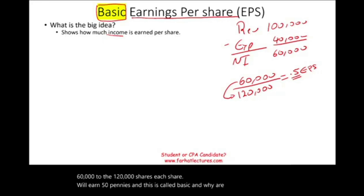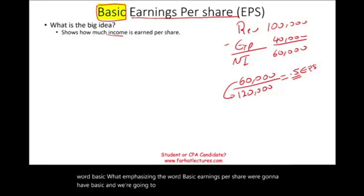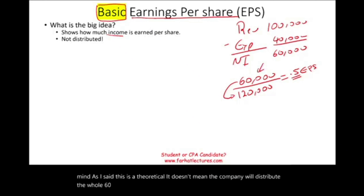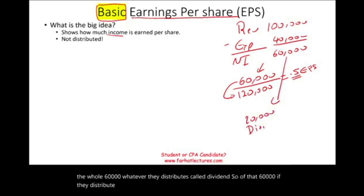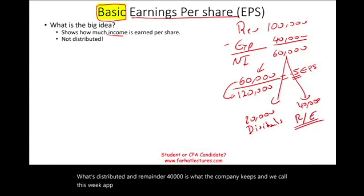Why are we emphasizing the word basic? We're going to have basic and we're going to have diluted — we'll talk about that later. Now bear in mind, this is theoretical. It doesn't mean the company will distribute the whole 60,000. Whatever they distribute is called dividend. So of that 60,000, if they distribute 20,000, that's called dividend. The remainder, 40,000, is what the company keeps, and we call this retained earnings.